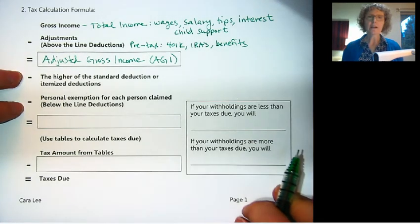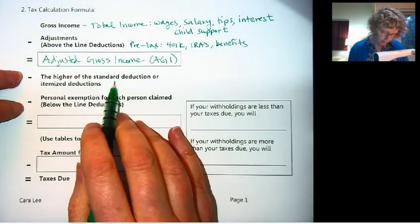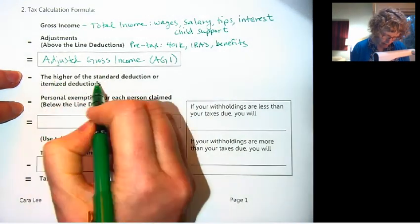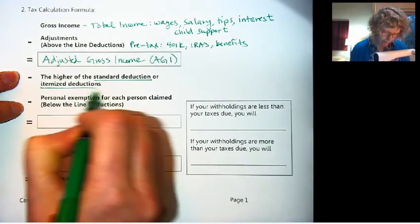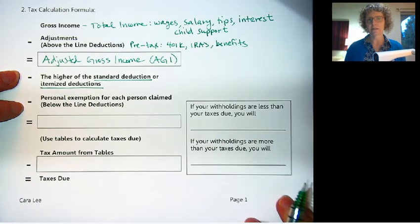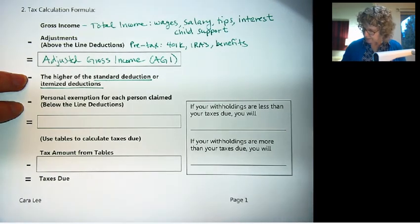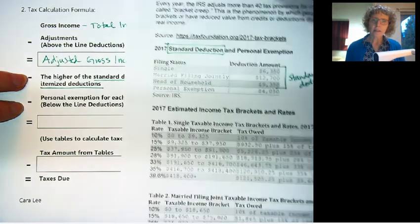The first thing is called the deductions. The second thing is called the exemption. So the first thing is you get to take the higher of either the standard deduction or the itemized, your itemized deductions. So let me show you. I have the tax table here. This is for 2017 tax year.